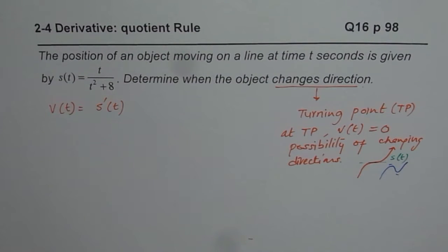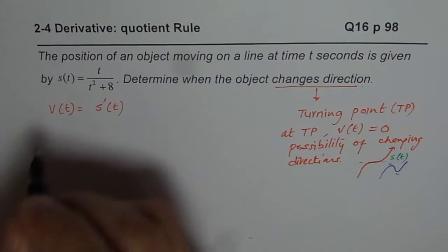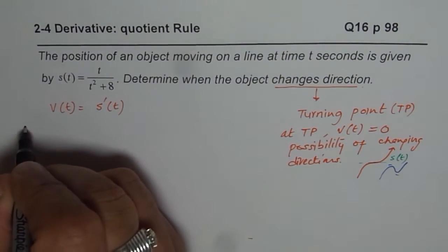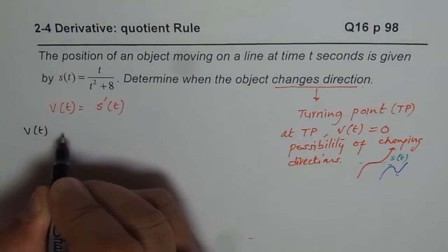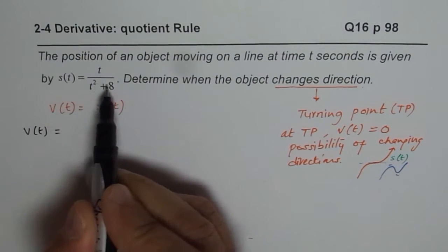With this in mind, I think you are in good position to solve this particular question. So, find the derivative, equate to 0, solve the question and then check with my solution. Here is my solution. So, to find velocity, we will take derivative and to take derivative, we will apply the quotient rule.